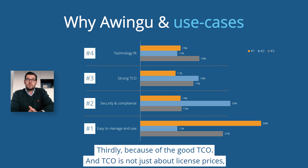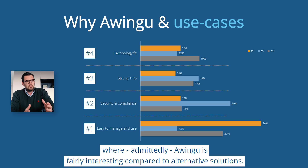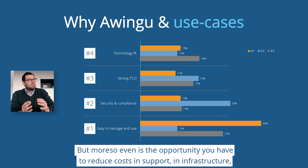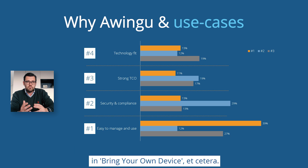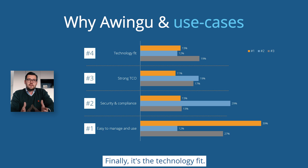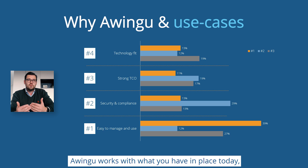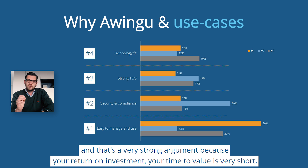Thirdly, customers choose Owingo because of the good TCO. TCO is not just about license prices — where Owingo is fairly interesting compared to alternative solutions — but more so the opportunity to reduce costs in support, infrastructure, and bring-your-own device. Finally, it's the technology fit: Owingo does not require a greenfield environment, it works with what you have in place today, so your internal investment and time to value is very short.